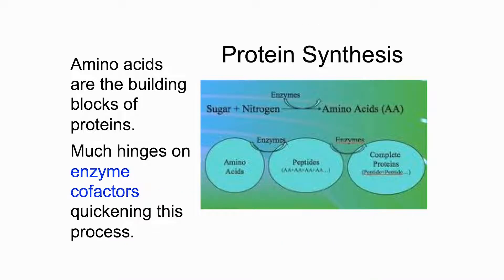We go on from there to those sugars being combined with nitrogen to form proteins. Amino acids are the building blocks of proteins, so we want plants to do that synthesis efficiently as well, so that it's mostly complete proteins being formed rather than a lot of amino acids floating free in the sap.